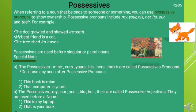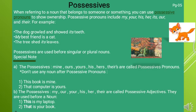Possessives are used before singular or plural nouns. The possessive pronouns — mine, ours, yours, his, hers, and theirs — are called possessive pronouns. Don't use any noun after these possessive pronouns. For example: this book is mine; that computer is yours. The possessive adjectives — my, your, his, her — are called possessive adjectives. They are used before a noun, as in: this is my laptop; that is your book.